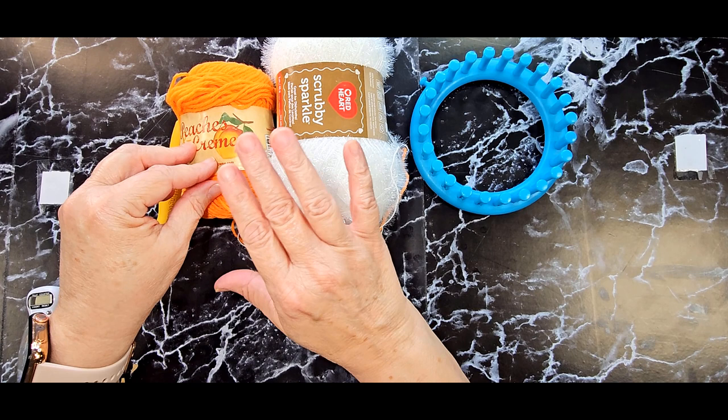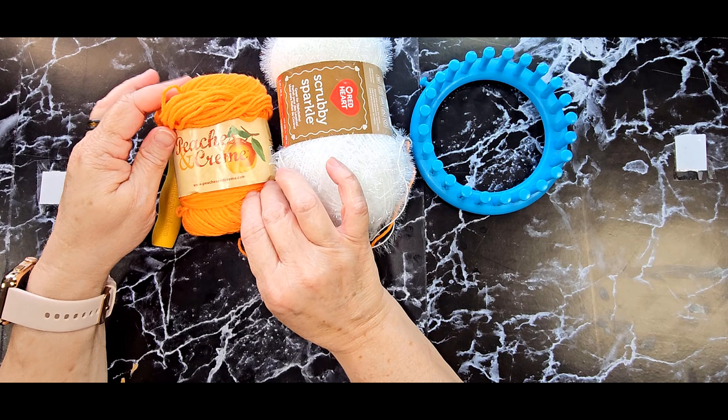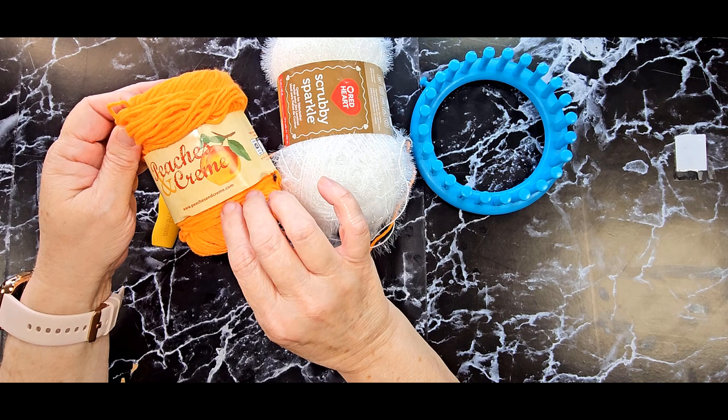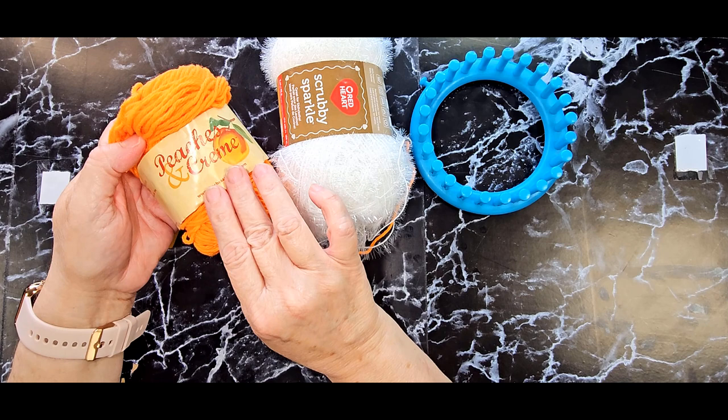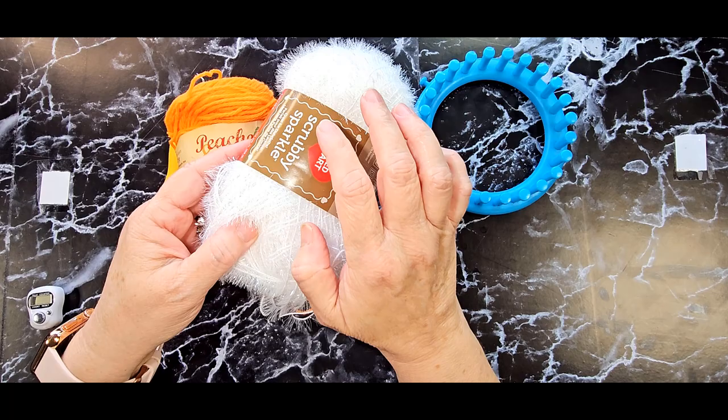And the yarn you'll need, you'll need a cotton yarn of your favorite color or whatever you choose but it does need to be cotton because you're going to be washing dishes with this. I do not recommend an acrylic. Use 100% cotton. And today I'm using peaches and cream in the color bright orange. And you'll need some type of a scrubby yarn. And I'm using red heart scrubby sparkle in the color marshmallow. So let's get started.